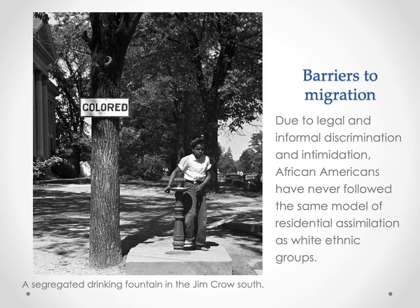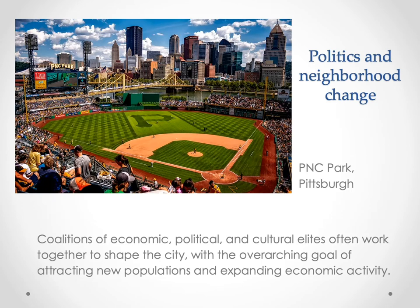Harvey Moloch talks about the urban growth machine and how cities are obsessed with growth — the necessity to constantly grow. Recent models of urban change have paid closer attention to how political power and economic interests affect patterns of change within the city. Here is a picture of PNC Park — PNC being a bank — and this is a baseball field. This is something where a coalition of economic, political, and cultural elites worked together to shape the landscape of the city with the goal of attracting new populations and expanding economic activity. This redevelopment of Pittsburgh provides an example of what Harvey Moloch calls the urban growth machine — this constant and relentless attempt at growing that can change the entire landscape of one part of the city.